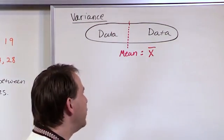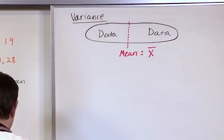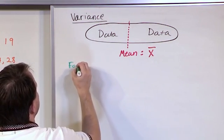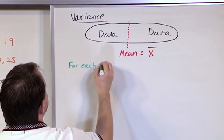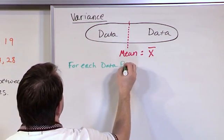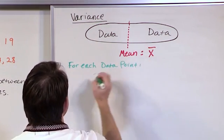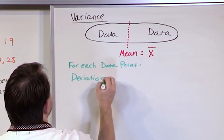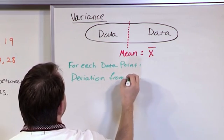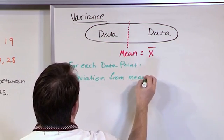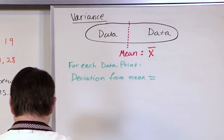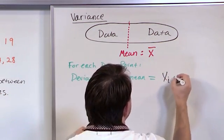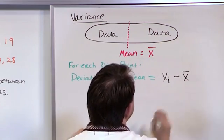So if we're just going to examine one point, and only one point right now, then what we would find is, for each point, for each data point, the deviation from the mean is very simple, nothing too complicated here: the data value minus the mean.